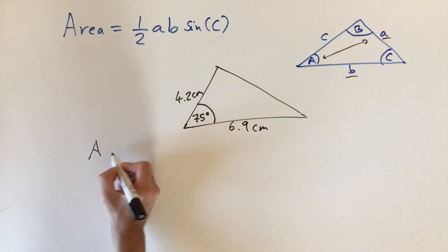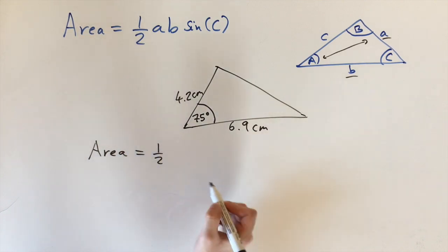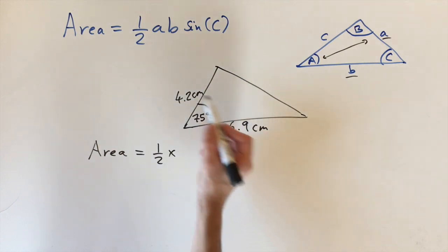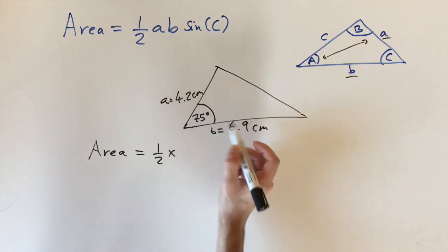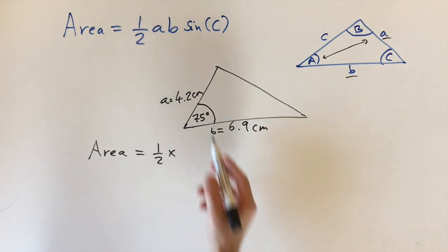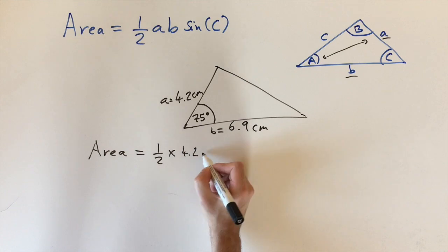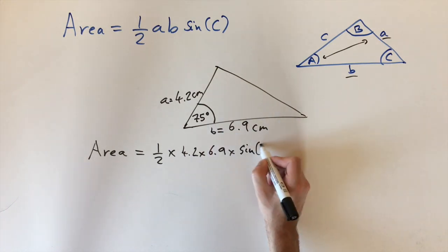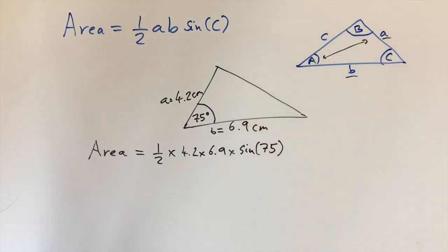We've got all the information we need. If we plug it in, the area equals 1/2 times a times b. We're labeling this side as a and this one as b—it doesn't matter which side you label as long as you've got the angle between them. So it's 1/2 times 4.2 times 6.9 times sine of 75 degrees. If you plug that into a calculator you'll get roughly 14.0 centimeters squared.